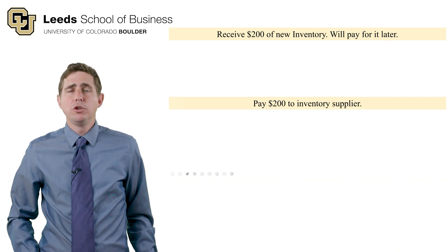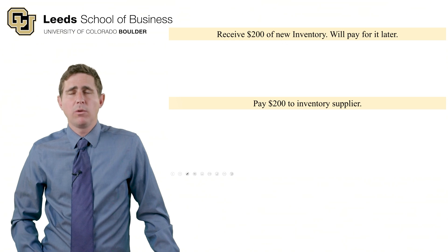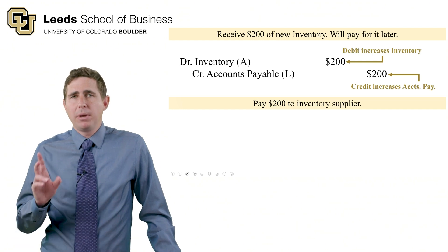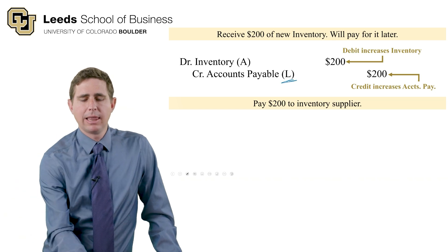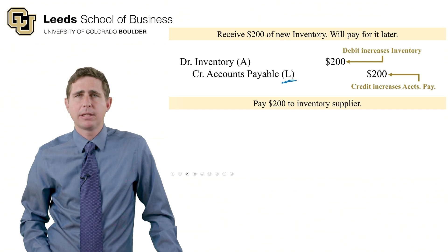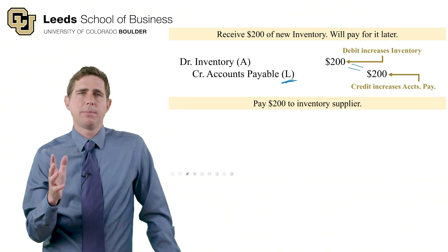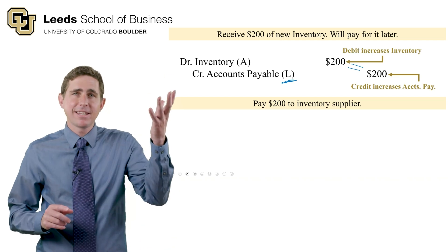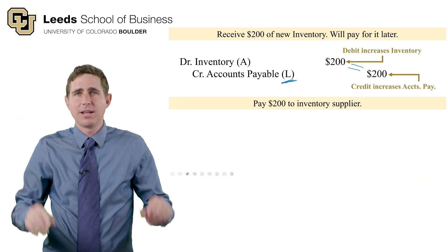Next, we receive $200 of new inventory and we'll pay for it later. Inventory is an asset, so we make it go up with a debit — debit inventory for $200. We haven't paid yet, so this is an accounts payable. Accounts payable is a liability going up, and we increase liabilities with a credit. As long as debits equal credits, your balance sheet stays in balance — here we're increasing assets and increasing liabilities, which are on opposite sides of the equal sign.